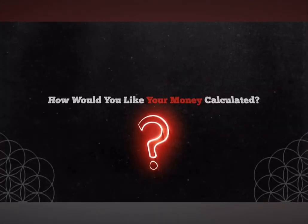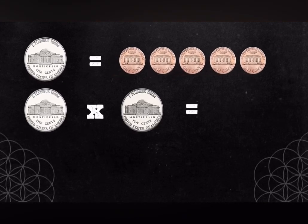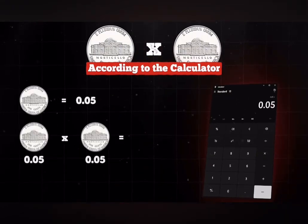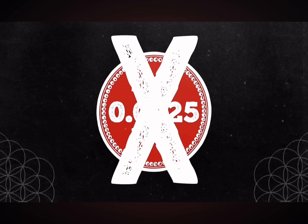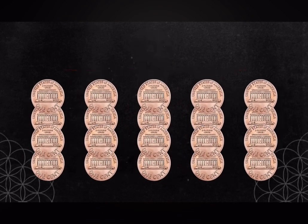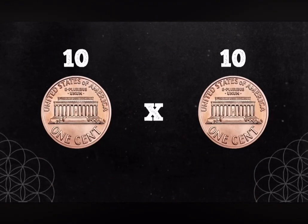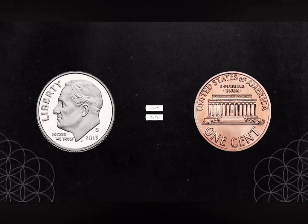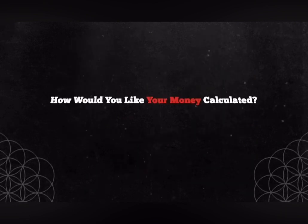How would you like your money calculated? A nickel times a nickel equals what? A nickel is equivalent to five pennies, so a nickel times a nickel should equal a quarter. But according to the calculator, 0.05 times 0.05 equals 0.0025 — a value so small there is no currency circulated to represent it. A dime times a dime equals what? A dime is equivalent to 10 pennies, so a dime times a dime should be 10 pennies times 10 pennies, which equals 100 pennies — a dollar. But the calculator says 0.10 times 0.10 equals 0.01. How would you like your money calculated?